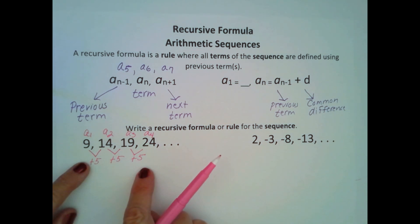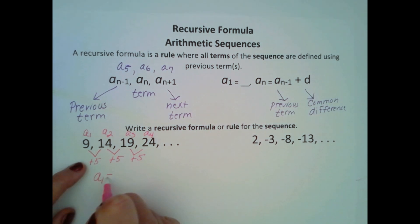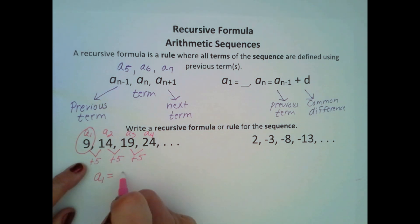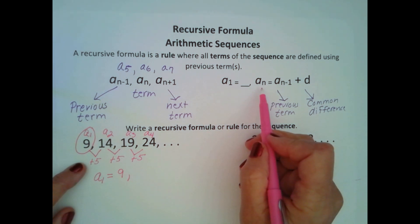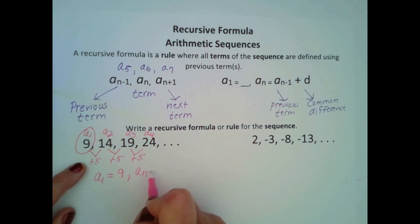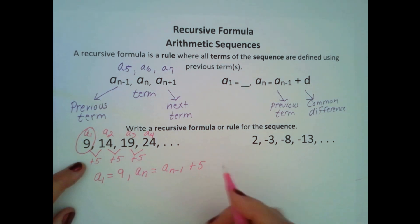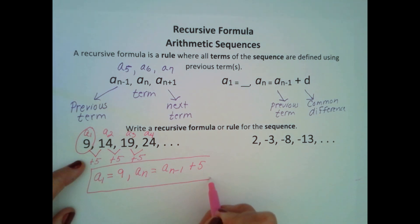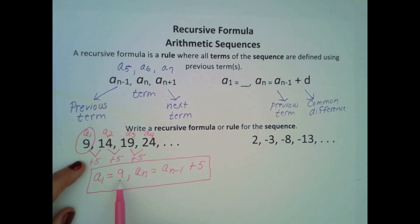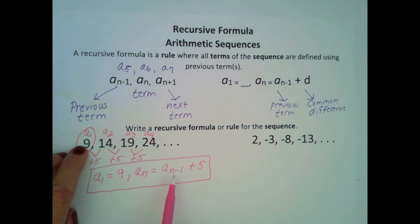Now when we're writing the recursive formula, the first thing I'm going to do is write a sub 1. a sub 1 is equal to 9. Then I'm going to write a recursive rule for a sub n: a sub n is equal to a sub n minus 1, which is our previous term, plus our difference of 5. That's our recursive formula. What it means is that we start with 9, and then every other term past that — for instance 14 — I take the term before, which is 9, and add 5 to it.